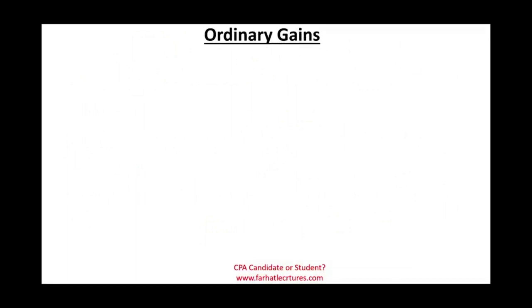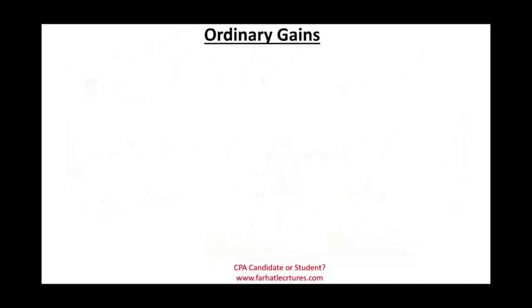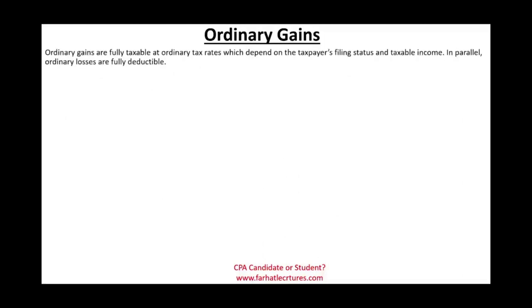Short-term capital gains are taxed at ordinary income rates. For 2022, here's the tax table. These rates will change in subsequent years. The brackets are progressive: 10% on the first $10,275; 12% on income between $10,275 and $41,775; 22% on income between $41,775 and $89,075. Rates continue increasing through 24%, 32%, and up to 37%.